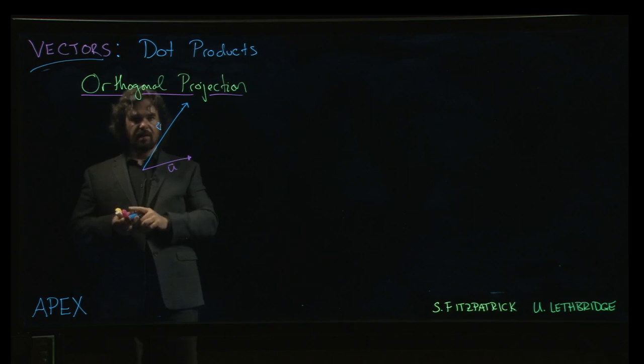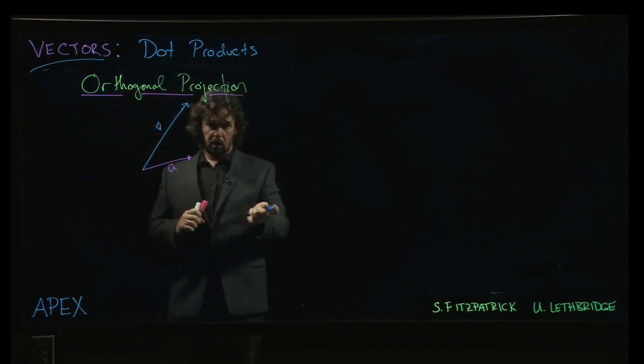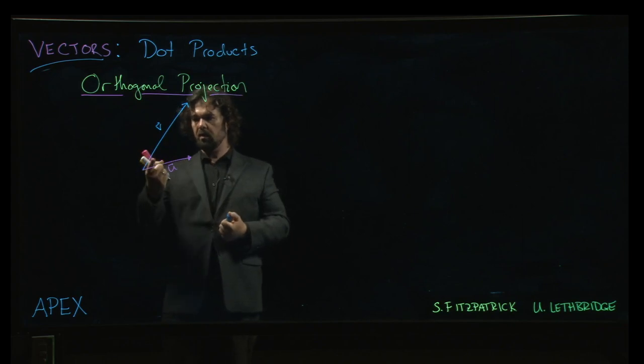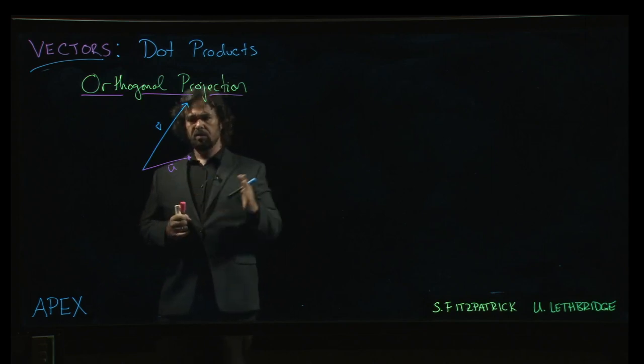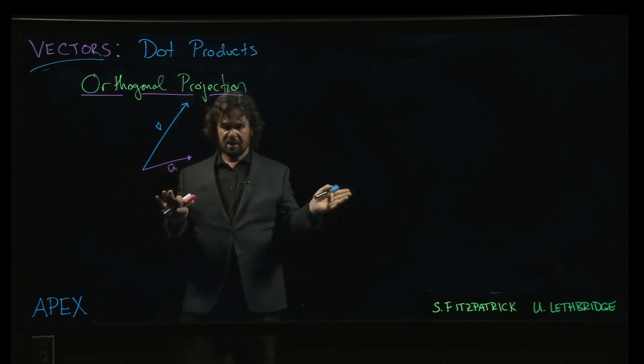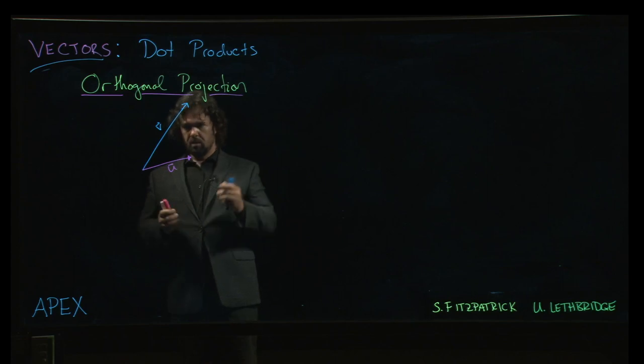Now the relative lengths of these two vectors aren't important. v might be shorter or longer than u. The angle here, I've drawn it as an acute angle. It doesn't have to be. It could be obtuse. If it's a right angle, it's going to not be very interesting. But we can start with this.